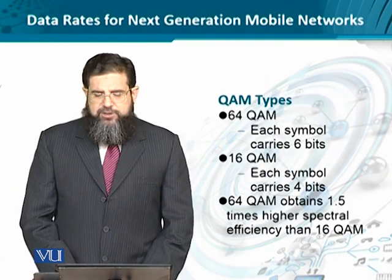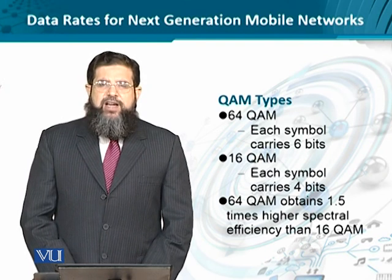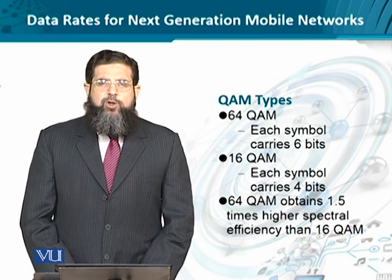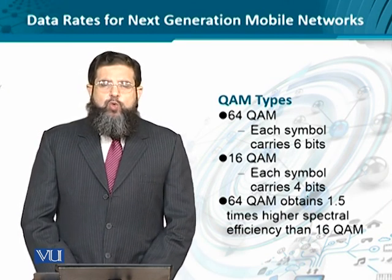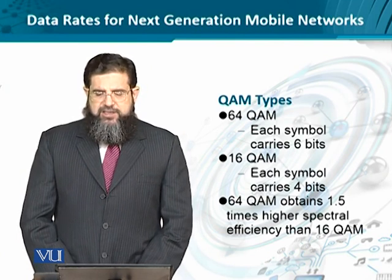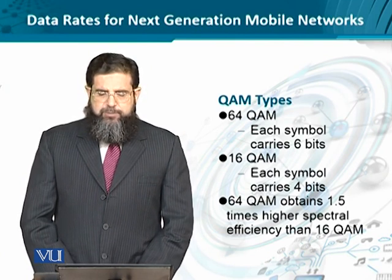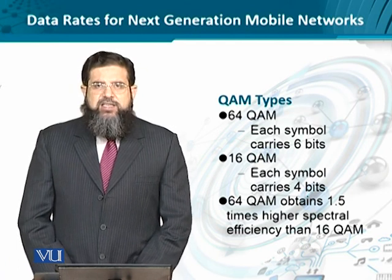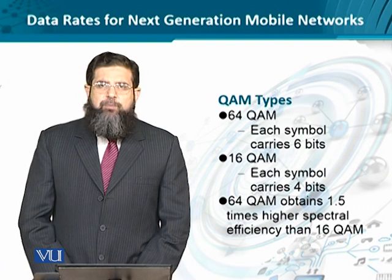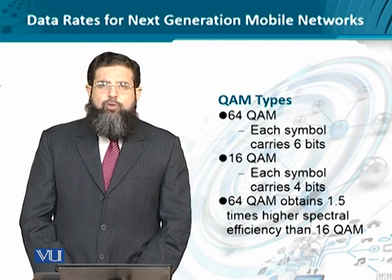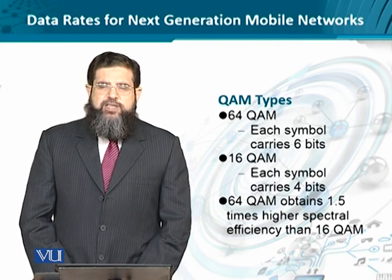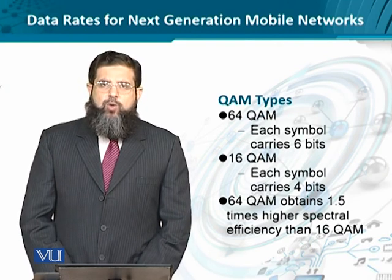Different QAM types can be compared in terms of the spectral efficiency they provide. Since 64 QAM corresponds to 2 to the power of 6, each symbol can carry up to 6 bits. In contrast, 16 QAM carries only 4 bits per symbol. Comparing these two, there is an improvement of 1.5 times when moving from 16 QAM to 64 QAM.